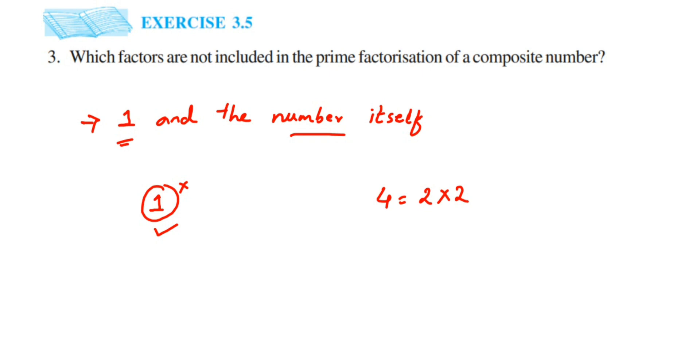2 is a prime number. I will not write 4 as 1 × 4—that's not a prime factorization. Similarly, if you take any composite number, we will not use 1 and the number itself while doing a prime factorization.